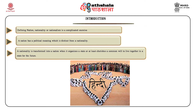This view does not have much currency now. The generally accepted view today holds that rather than sharing attributes like common race, language, religion, it is a sentiment of a common consciousness that forms the basis of a nation. A nation has a political meaning which is distinct from a nationality. A nationality is transformed into a nation when it organizes a state or at least cherishes a common will to live together in a state for the future. When the territorial boundary of a state is coterminous with the cultural, linguistic and ethnic division of the people, it becomes a nation state, which is different from the state forms — for example, the empires of earlier times which constituted more than one, and often several, national groups.